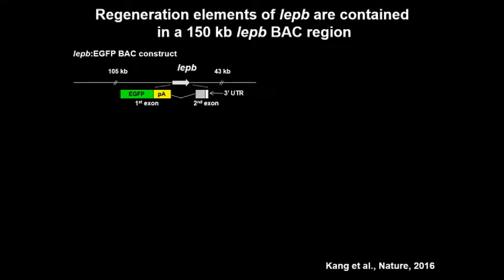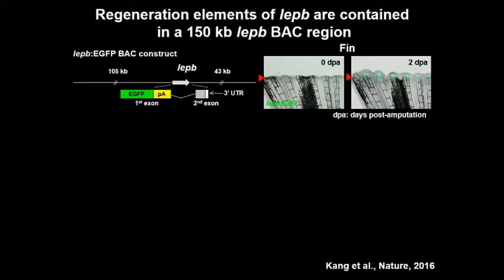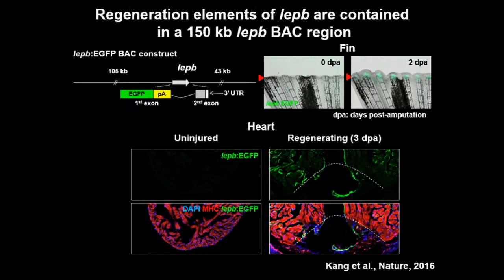To capture the regeneration element of Leptin B, we generated a Leptin B BAC reporter transgene. The Leptin B BAC contains 100 kilobases upstream and 43 kilobases downstream sequence. We replaced the first exon with a GFP transgene and generated the Leptin B BAC reporter line. We didn't see any GFP expression in uninjured fin and heart throughout life. However, after fin amputation, the fin strongly induced GFP in the mesenchymal cells. Uninjured heart also showed no GFP expression, but after amputation of the ventricle — this dot indicates the ventricular resection plane — the heart strongly induced GFP in endocardial cells, which are the inner lining cells of the heart chamber. These data indicate that there is a regeneration element within the 150-kilobase Leptin B BAC area.